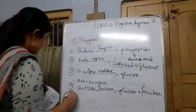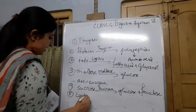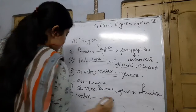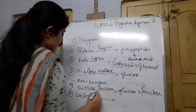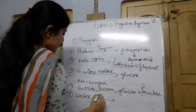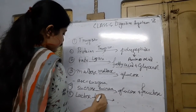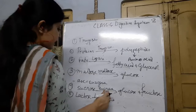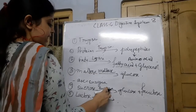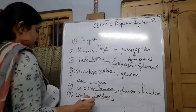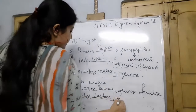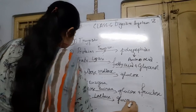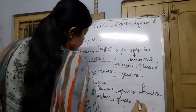Lactose digestion is carried out by the lactase enzyme — note it also ends in '-ase.' Lactase acts on lactose and forms glucose and galactose.